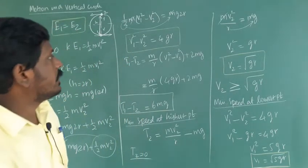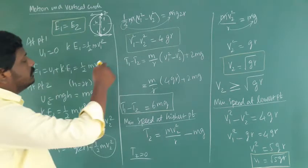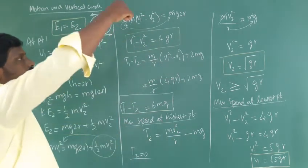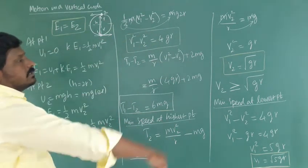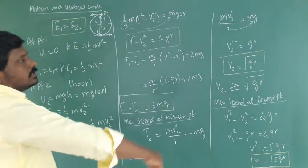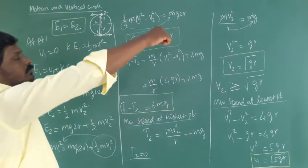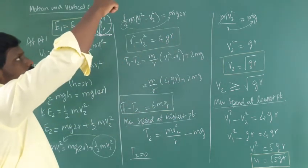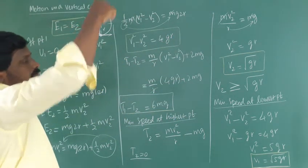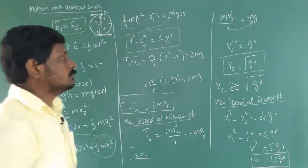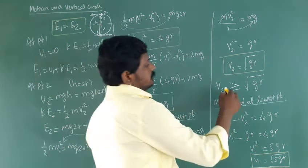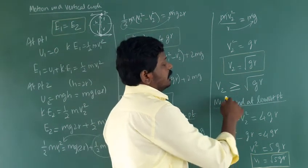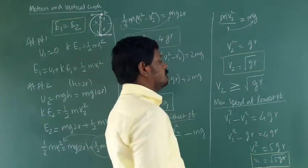At the highest point, the object moves against gravity in the vertical circle, so it loses velocity and reaches a minimum. Therefore the minimum velocity at the highest point is V2 equal to square root of gr, or more precisely V2 greater than or equal to square root of gr.